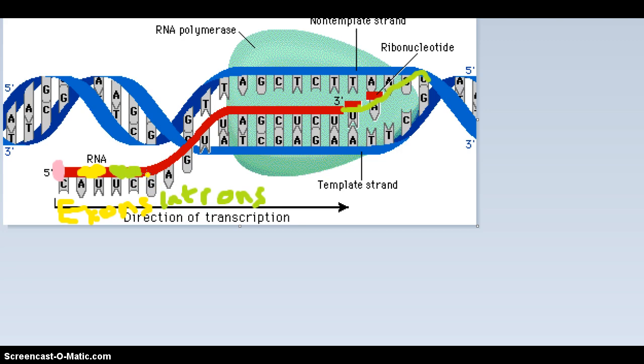And remember that the introns stay in, the exons stay out. And remember that the 5' cap is placed in the front of the mRNA, and a poly-A tail is placed at the end.